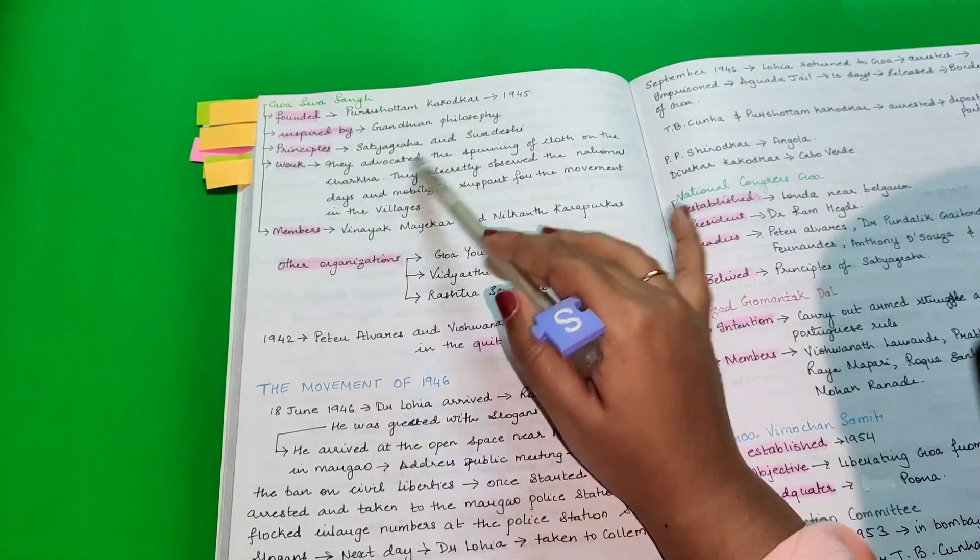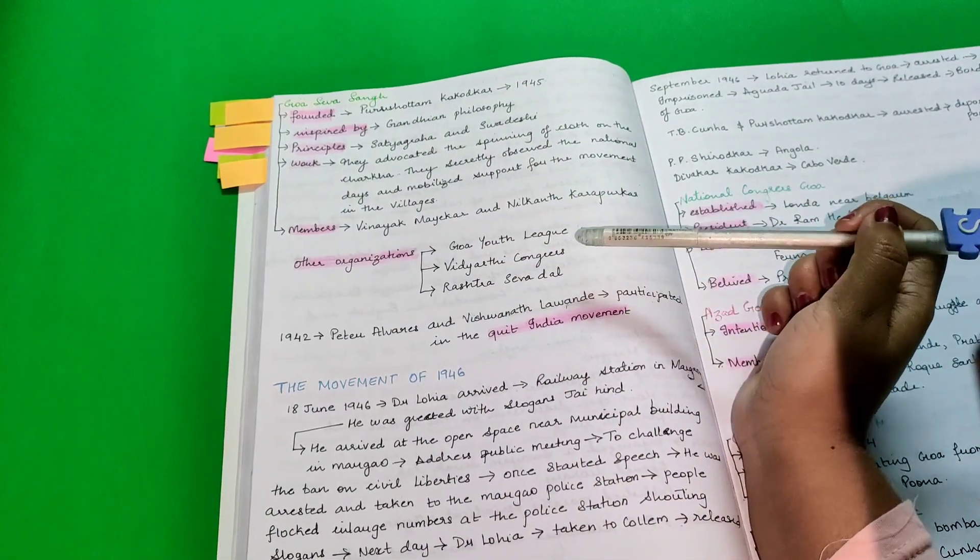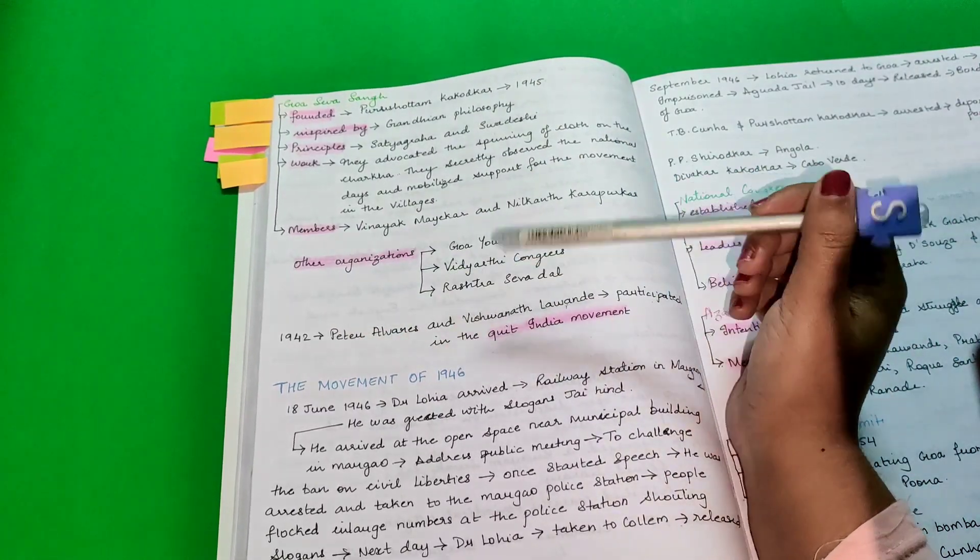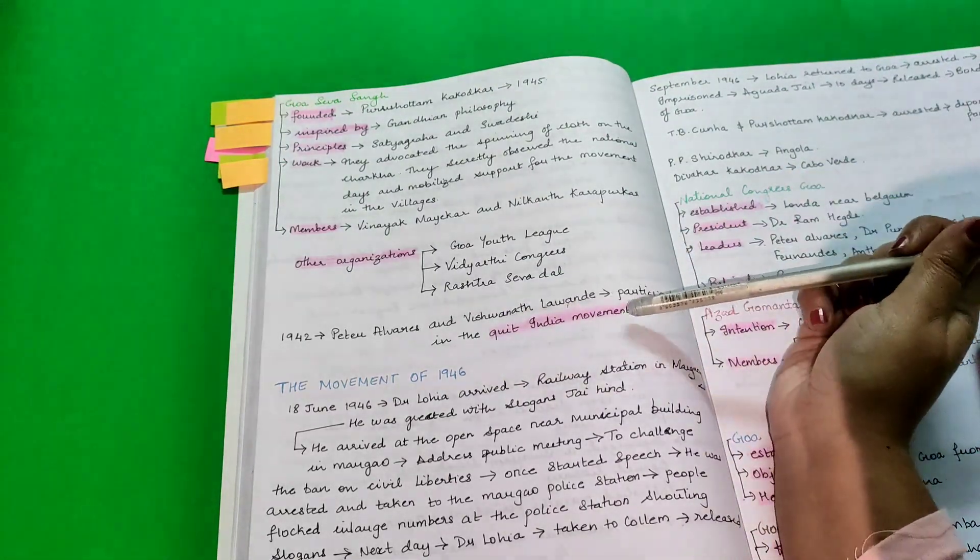Other organizations like this were Goa Youth League, Vidyarthi Congress, Rashtra Seva Dal. In 1942, Peter Alwaris and Vishwanath Lavende had participated in the Quit India movement.